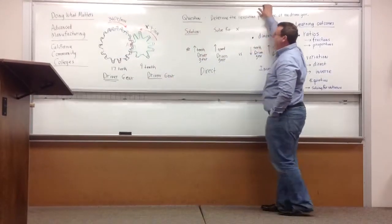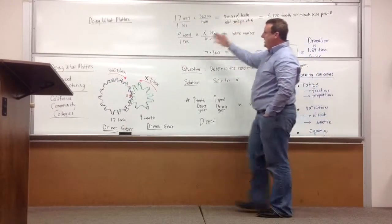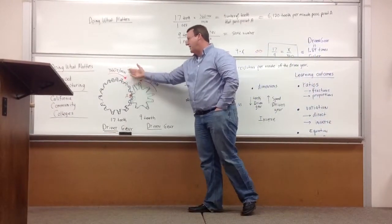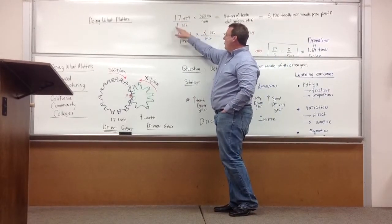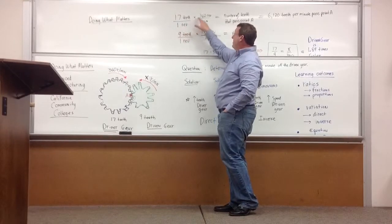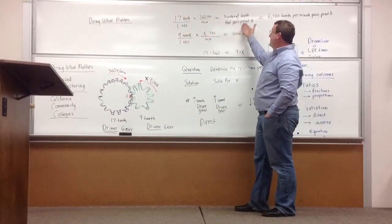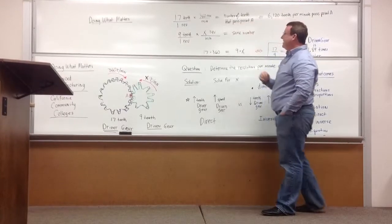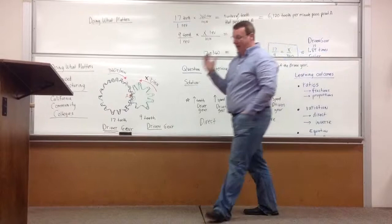One way of looking at this is how many teeth will pass this point A in one minute. It's a pretty simple equation. You'll have 17 teeth per one revolution, 360 revolutions per one minute. That'll tell you the number of teeth that passed point A in one minute. Doing the math, you find out 6,120 teeth passed that point.